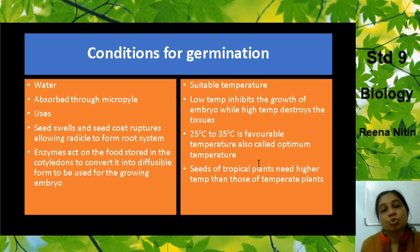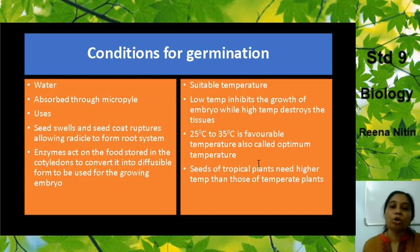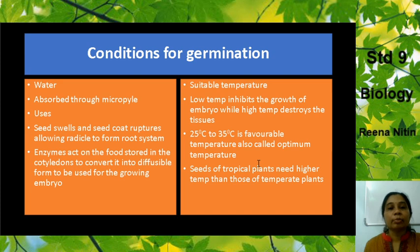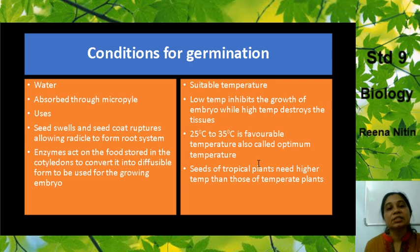The next condition is suitable temperature. Low temperature inhibits — meaning stops — the growth of the embryo, while a very high temperature will destroy the tissues. So both high and low temperature are not good; you need a moderate temperature. The favorable temperature is 25°C to 35°C, also known as the optimum temperature. Seeds of tropical plants need a higher temperature than those of temperate plants, possibly due to the presence of more moisture in the air.